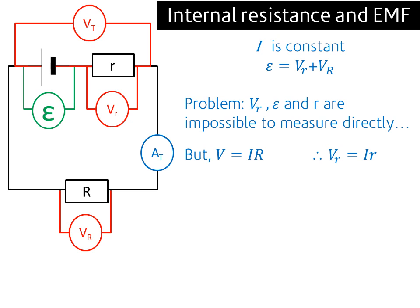we do know that V equals IR. Good old Ohm's law comes to the rescue again. So we know V equals IR, which means that the voltage across the internal resistor must be equal to the current through it multiplied by its resistance. And if we substitute that back into our formula, we get this here. So the EMF now is equal to Ir plus the potential difference across the external resistor.